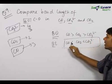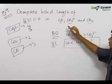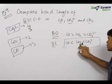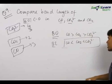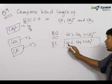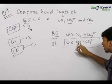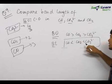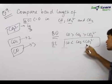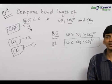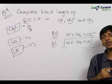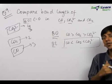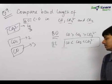So we get the final answer for the bond length comparison: the bond length of carbon monoxide is less than that of carbon dioxide, which is again less than that of CO₃²⁻. So this is the final answer. Whenever you need to compare bond lengths, use the bond order to get the answer.